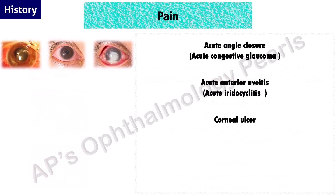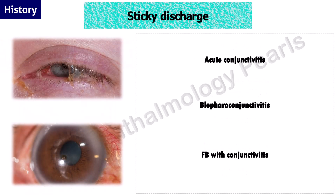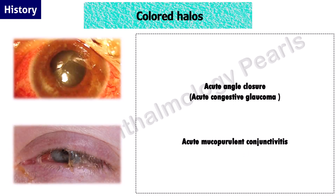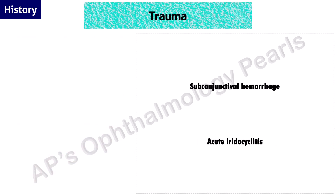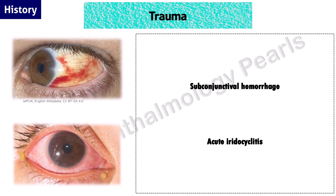If there is associated pain, an inflamed pterygium and scleritis are additional conditions to be kept in mind. Presence of discharge that causes eyelid stickiness is suggestive of a conjunctival infection, with or without a conjunctival or corneal foreign body. Colored halos with a red eye could indicate either acute angle closure or acute mucopurulent conjunctivitis; in addition to pain and diminished vision, a Fincham's test can be used to differentiate between the two. A history of trauma may be obtained in subconjunctival hemorrhage or traumatic uveitis.